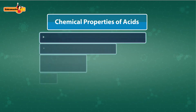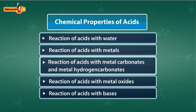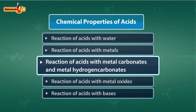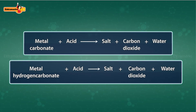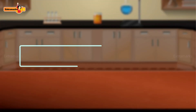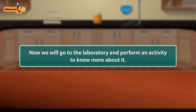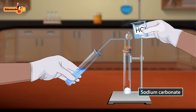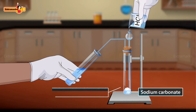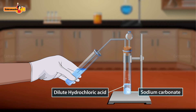Apart from water and metals, acids also react with metal carbonates and hydrogen carbonates. A salt, carbon dioxide, and water are formed by the reaction of acids with metal carbonates and hydrogen carbonates. Now we will go to the laboratory and perform an activity. Take a small amount of sodium carbonate in a test tube and add a small amount of dilute hydrochloric acid to it.